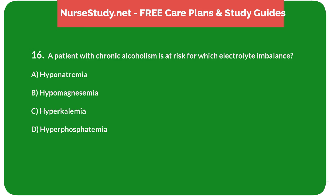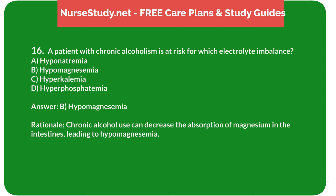Question 16: A patient with chronic alcoholism is at risk for which electrolyte imbalance? A. Hyponatremia. B. Hypomagnesemia. C. Hyperkalemia. D. Hyperphosphatemia. Answer: B. Hypomagnesemia. Rationale: Chronic alcohol use can decrease the absorption of magnesium in the intestines, leading to hypomagnesemia.